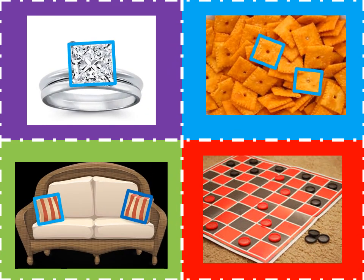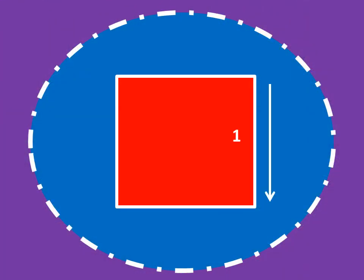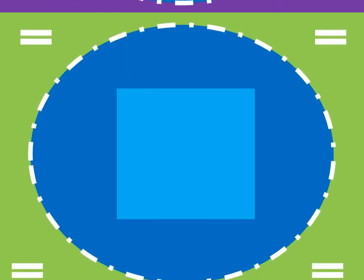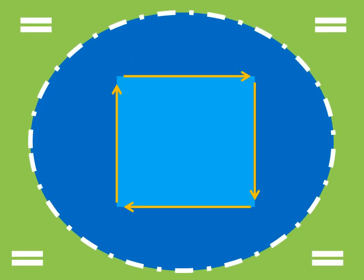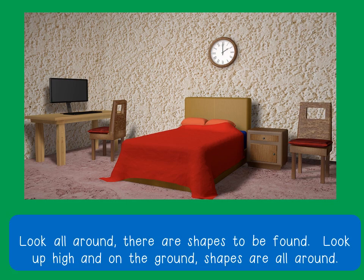These are squares. They have four sides. All sides are equal. These are squares.